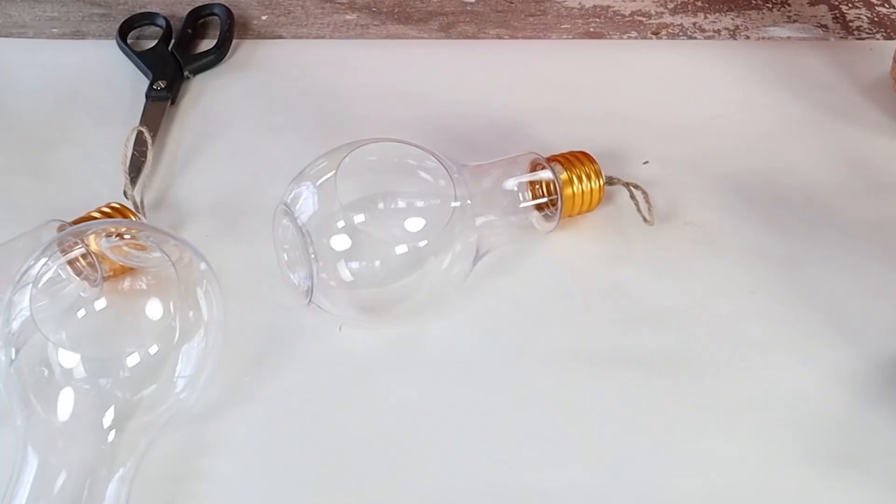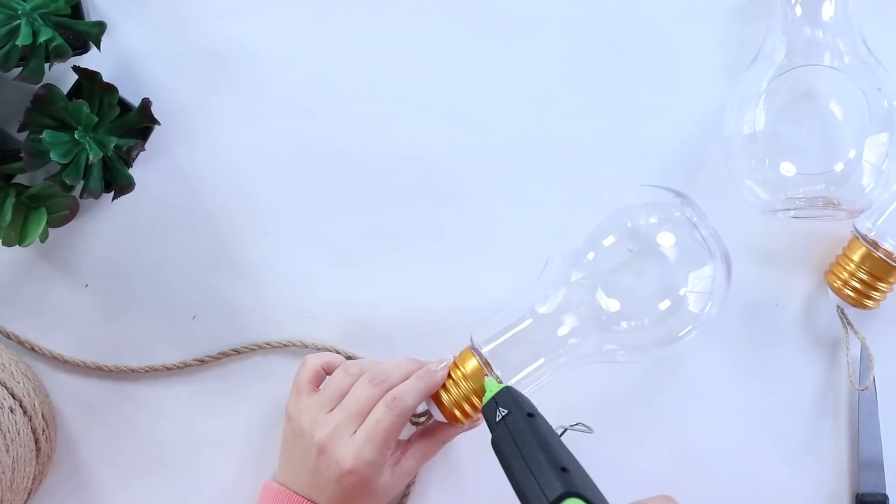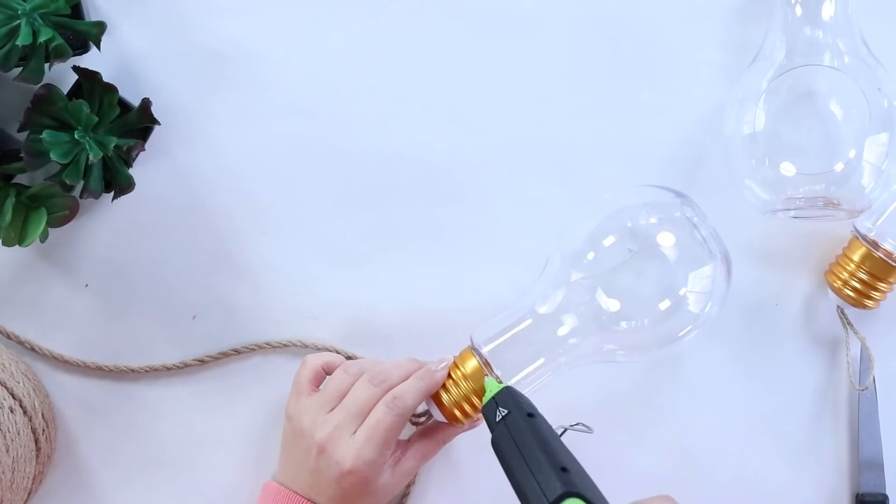Now I wasn't a fan of the gold piece at the top, so I decided I was going to wrap that with some nautical rope. And don't worry, all the supplies I'm using I'll link for you down in the description box plus what I'm wearing. So I started at the base, wrapping around the nautical rope and hot gluing it in place.